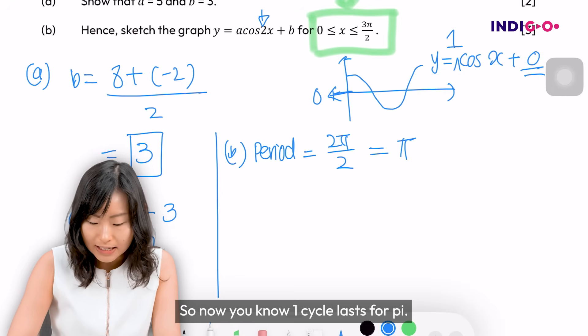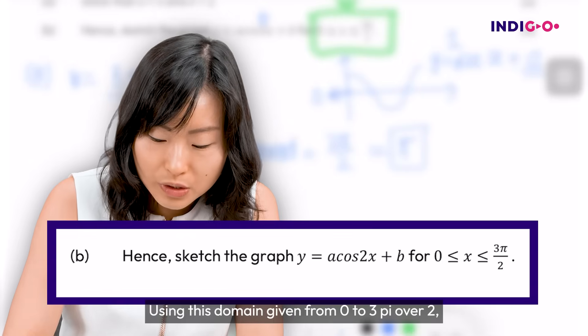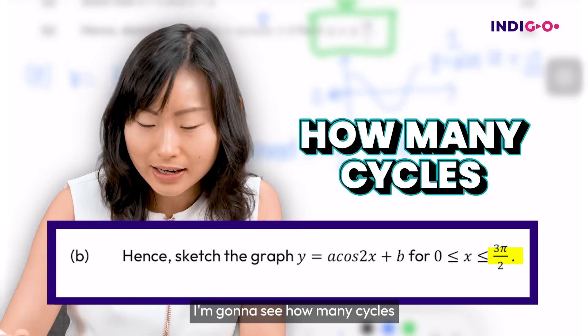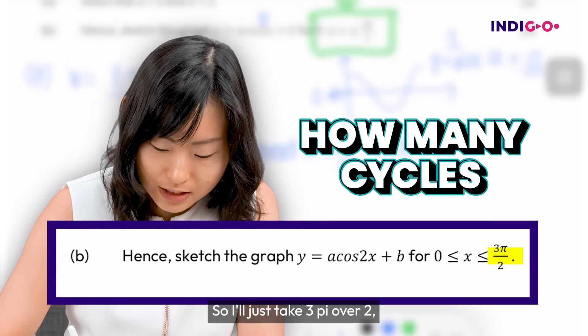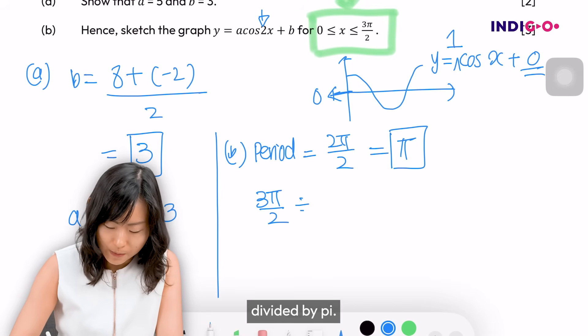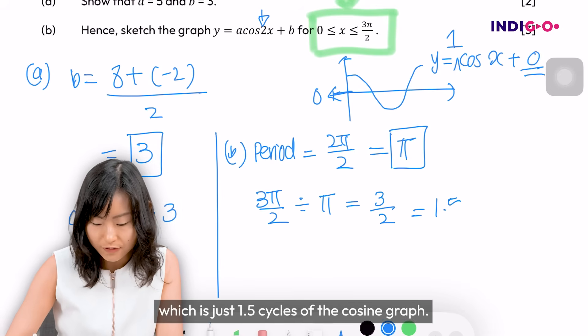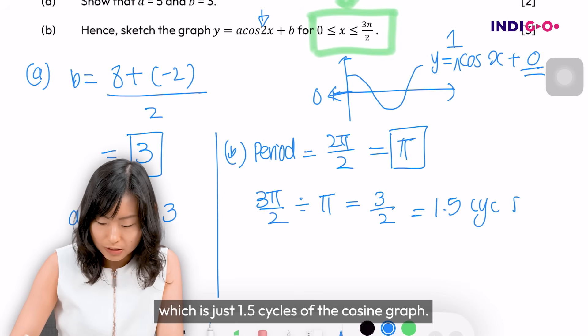So now you know one cycle lasts for π. Using this domain given from 0 to 3π/2, I'm going to see how many cycles of the cosine graph to draw. So I'll take 3π/2 divided by π, I get 3/2 which is 1.5 cycles of the cosine graph.